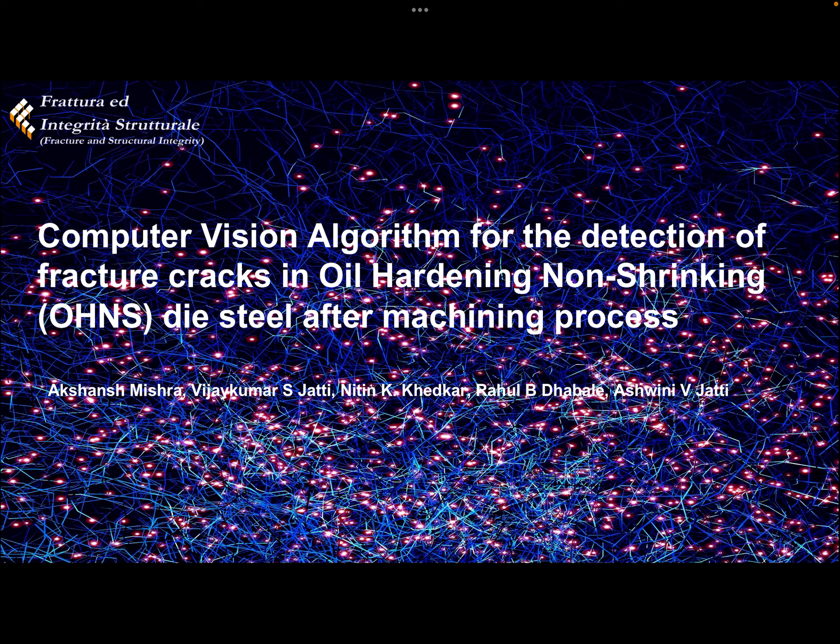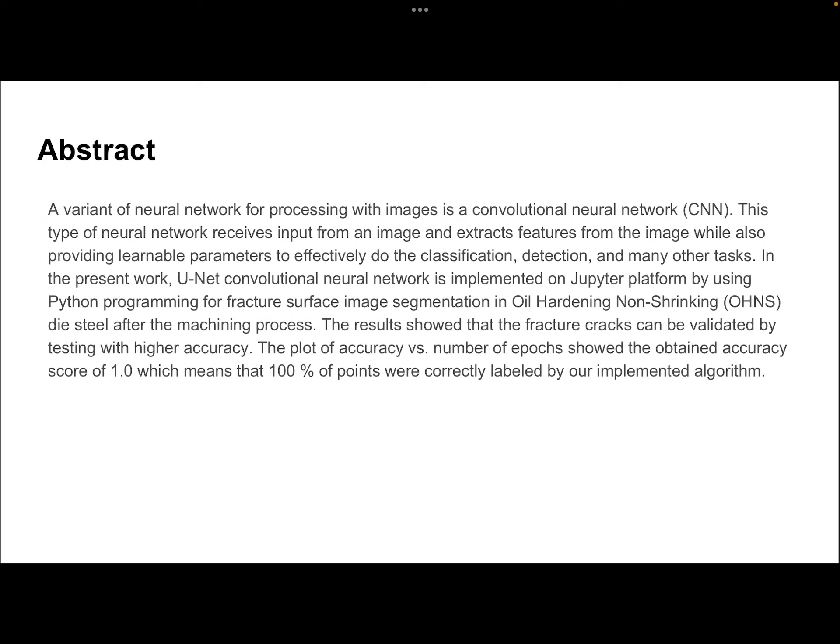The topic of our paper is a computer vision algorithm for the detection of fracture cracks in oil hardening non-shrinking densification process. In the present work, we have used a U-Net convolutional neural network for the detection of fracture cracks. This type of neural network receives input from an image and extracts features from the image while also providing learnable parameters to effectively perform classification, detection, and many other tasks.